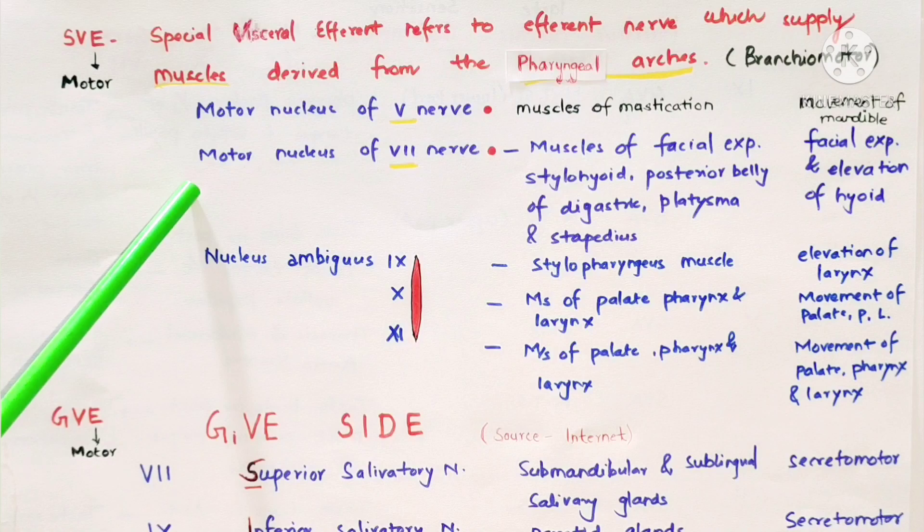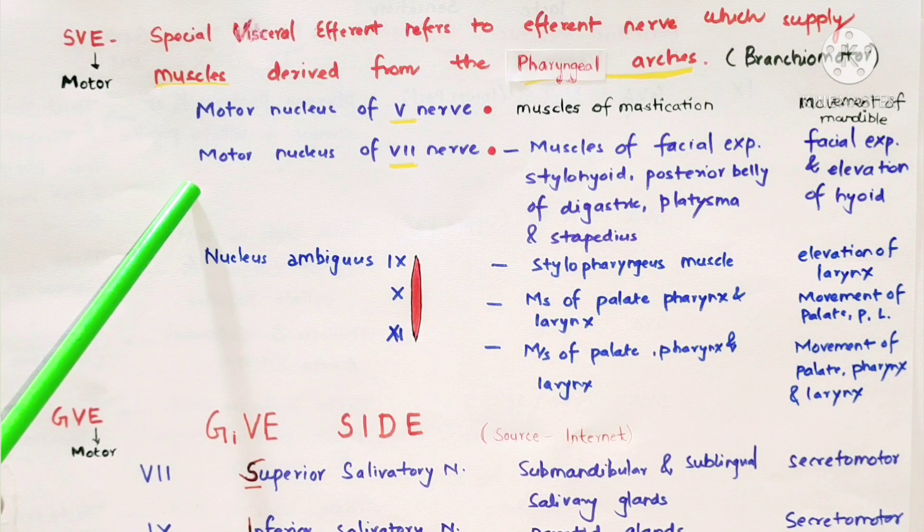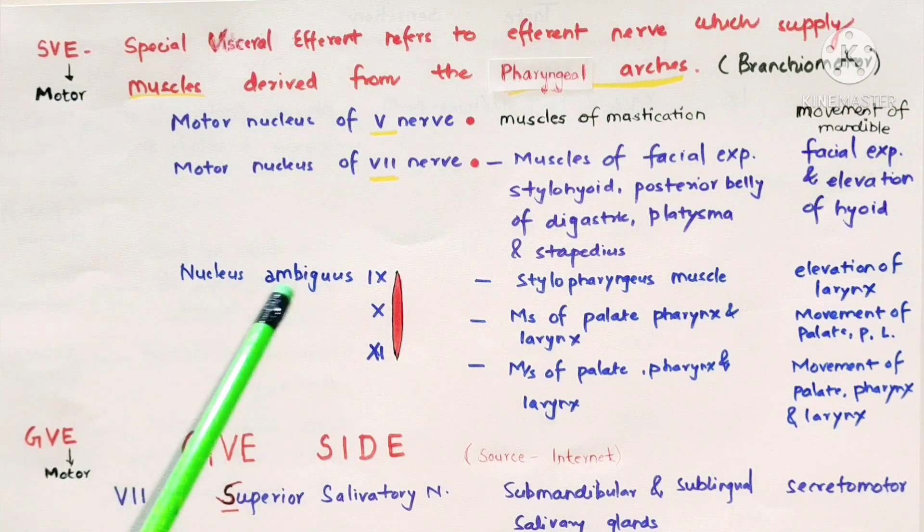Motor nucleus of facial nerve supplies muscles of facial expression like stylohyoid, posterior belly of digastric, and stapedius. The function is facial expression and elevation of hyoid bone.